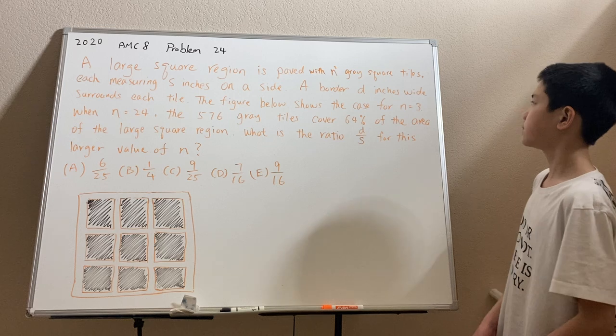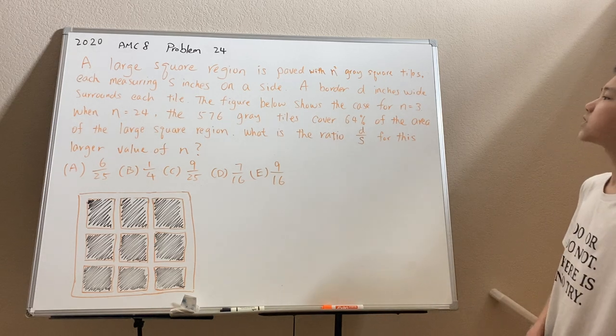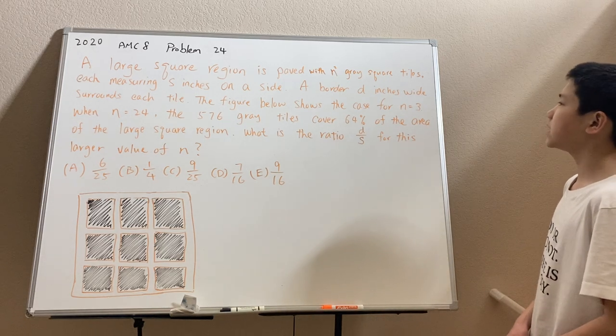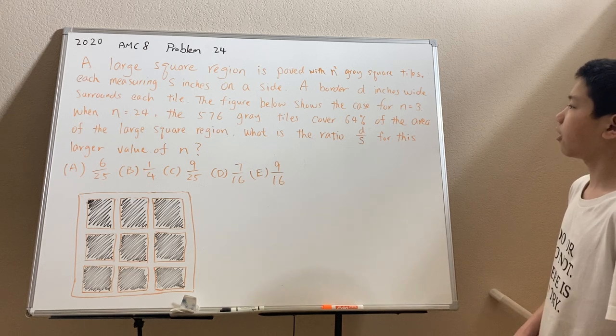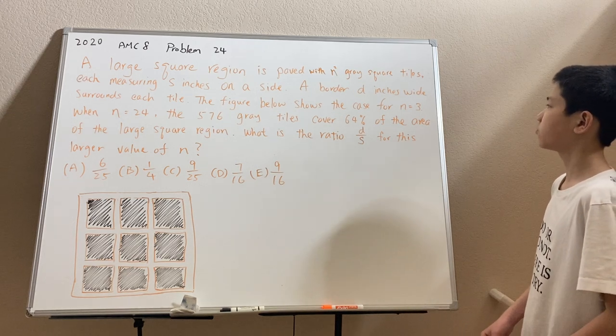The problem reads: a large square region is paved with n squared gray square tiles, each measuring s inches on a side. A border d inches wide surrounds each tile.